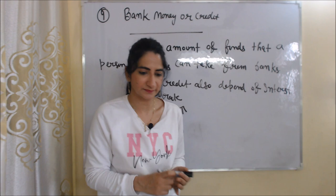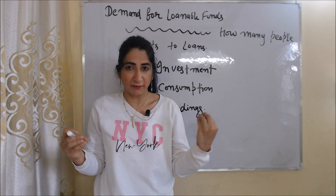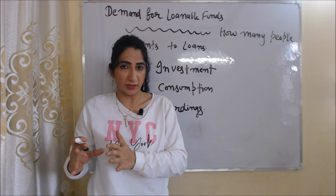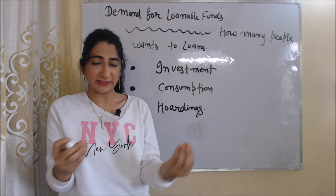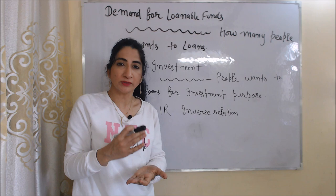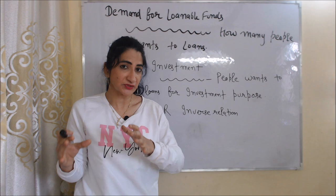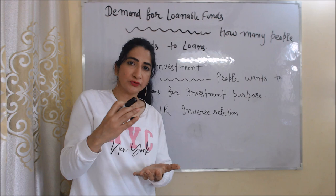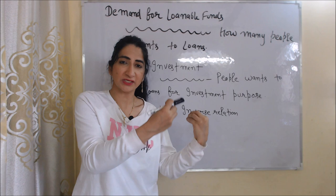Now we are going to talk about demand for loanable funds. Demand for loanable funds means how many people want to take loans. Demand for loanable funds depends on three factors: investment, consumption, and hoarding. The first factor is investment. People want to take loans from banks for investment purposes. Investment and interest rate have an inverse relation: if interest rate is very high, people want to take less loans for investment, and when interest rate is very low, people want to take more loans for investment.